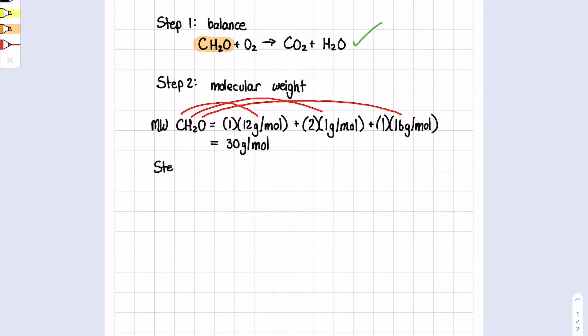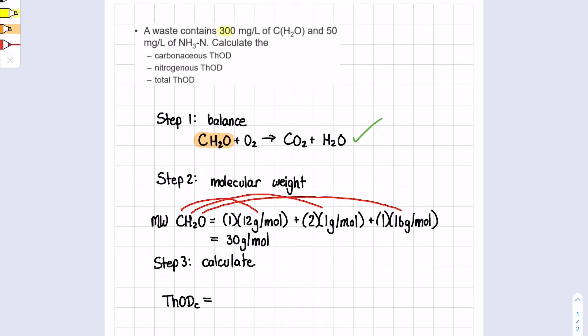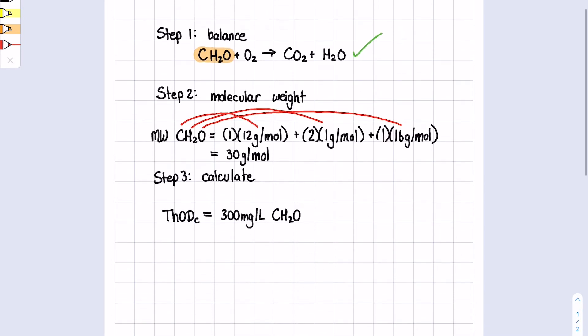Step three is to calculate the ThOD. Let's start with the carbonaceous ThOD, subscript C to notify it's carbon. We know from the question it is 300 milligrams per liter of CH2O. From our molar weight calculated, we have 30 grams per mole. To match grams with milligrams, I'm going to change the 30 grams per mole into 30,000 milligrams per mole.